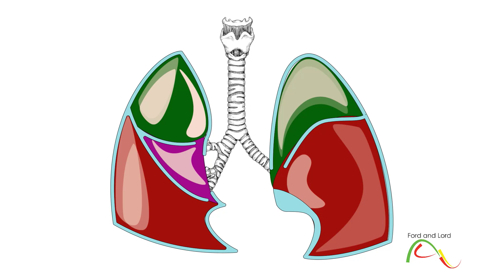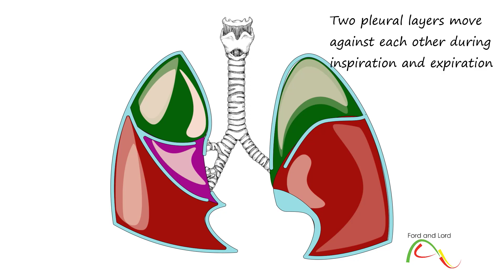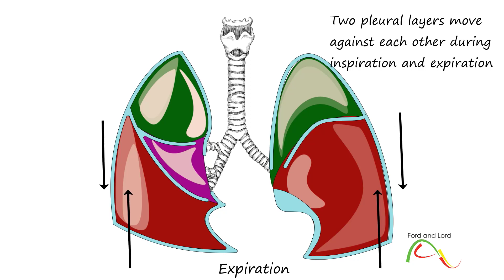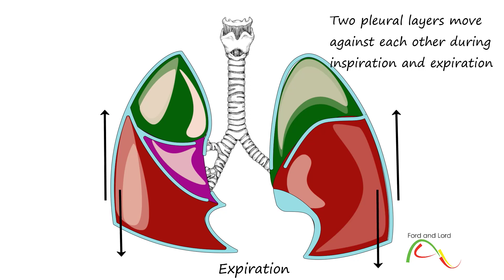Serous membranes including the pleura have at least two different functions. Firstly, they hold the organs in their position. Secondly, they allow some movement of these organs without creating friction. For example, lungs move continuously during the process of inspiration and expiration, and the adjacent surfaces of the parietal and visceral pleurae slide smoothly against each other. A small amount of pleural fluid in the pleural cavity acts as a lubricant.